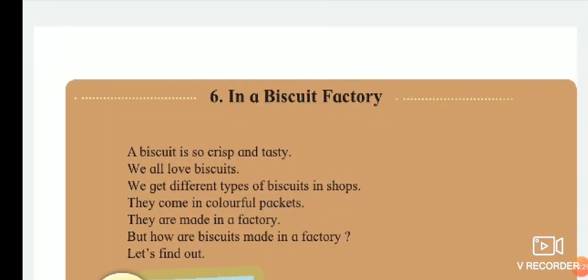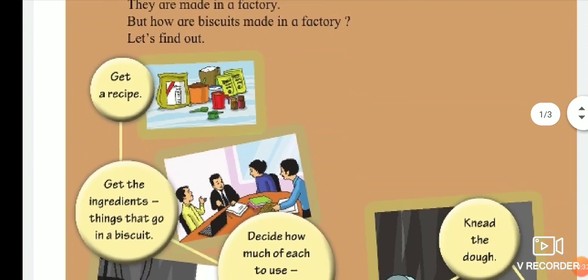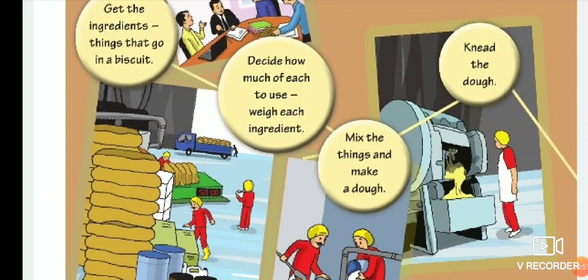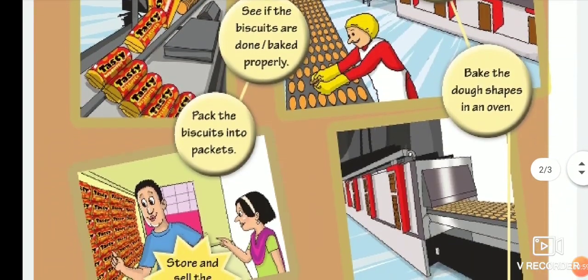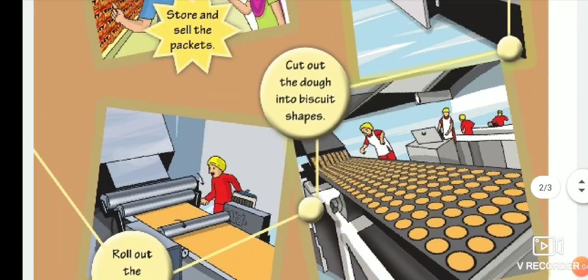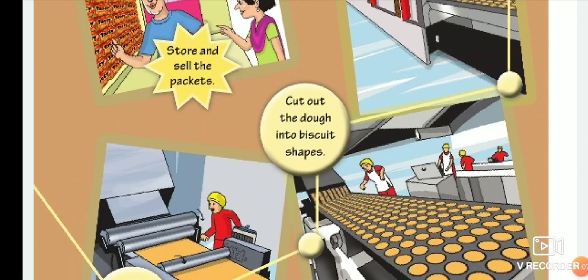The first step: get a recipe. Then get the ingredients — things that go in a biscuit. Next, decide how much of each to use and weigh each ingredient. Next, mix the things and make a dough. Next, knead the dough. Next, roll out the dough.